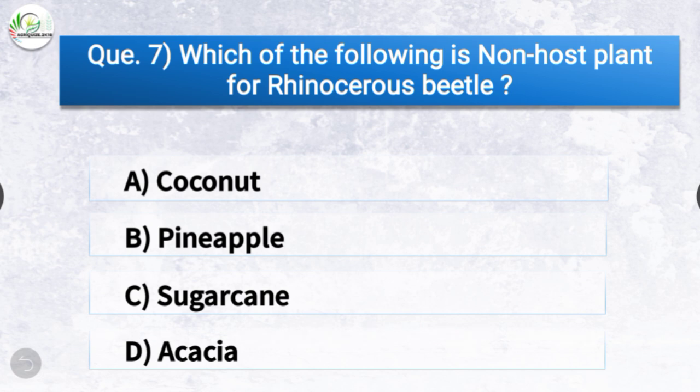Question number seven: Which of the following is a non-host plant for rhinoceros beetle? The options are coconut, pineapple, sugarcane, or acacia. The correct answer is option D, acacia — acacia is a non-host plant for rhinoceros beetle.